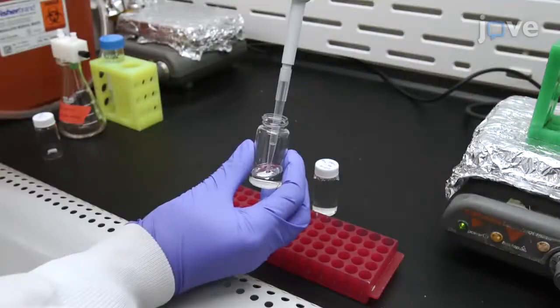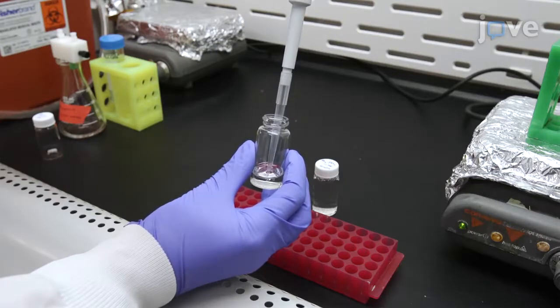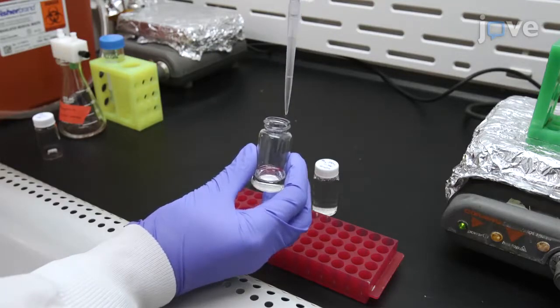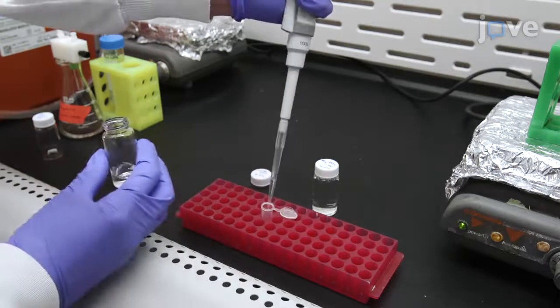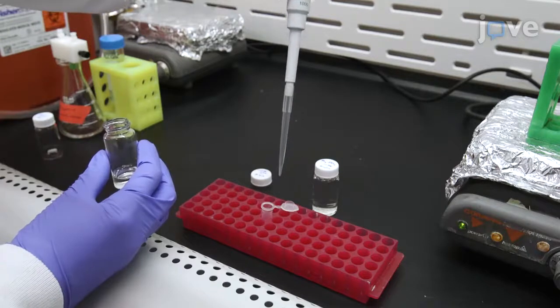Next, to begin preparing the solvent input stream, pipette 0.25 milliliters of a 10-milligrams-per-milliliter solution of vitamin E in stabilizer-free tetrahydrofuran into a 1.5-milliliter microcentrifuge tube.